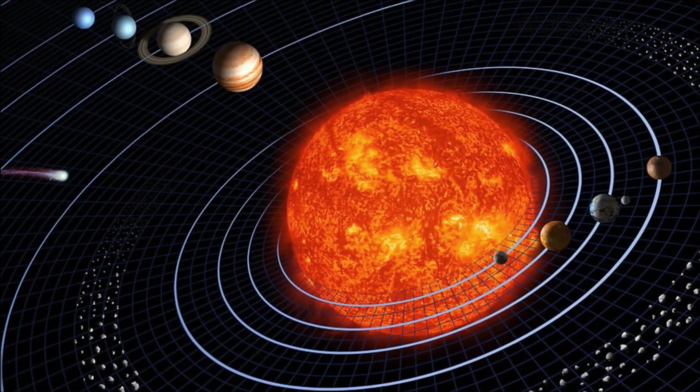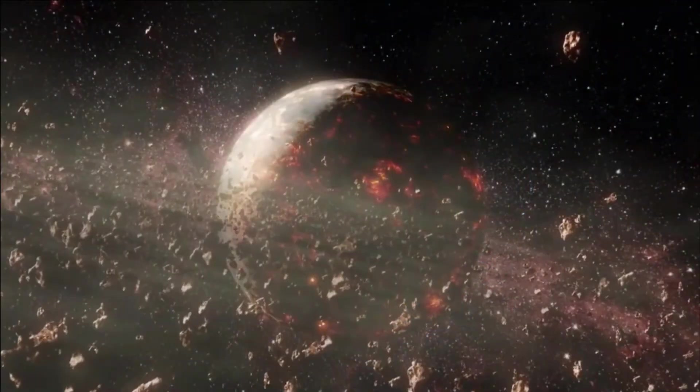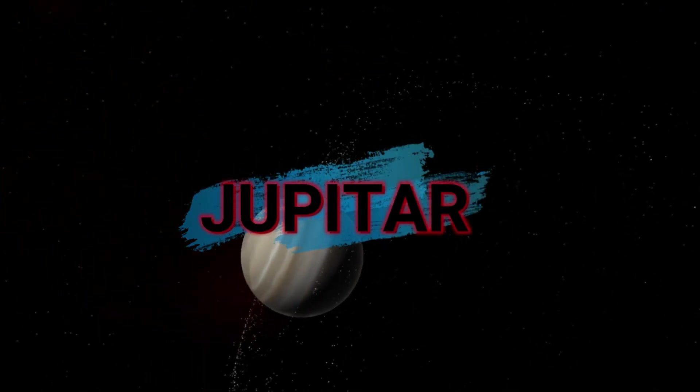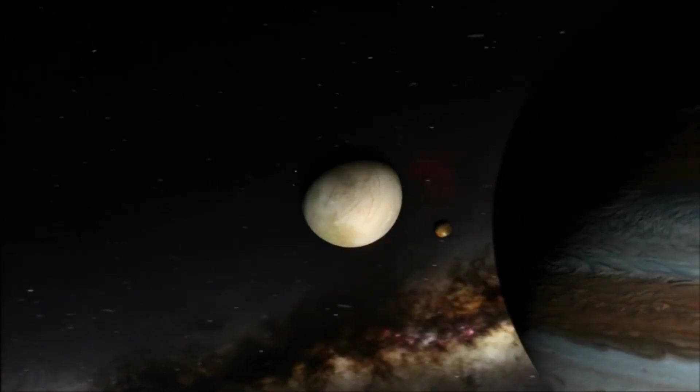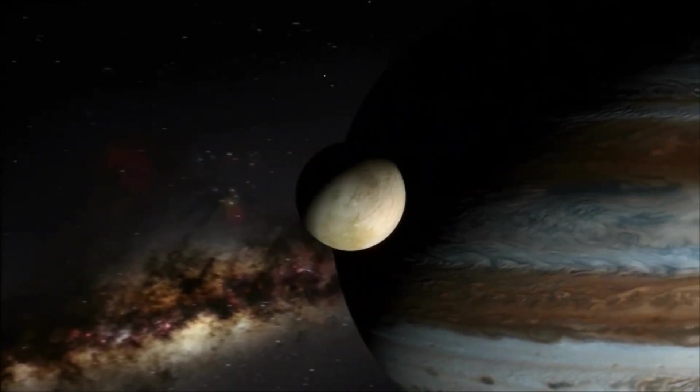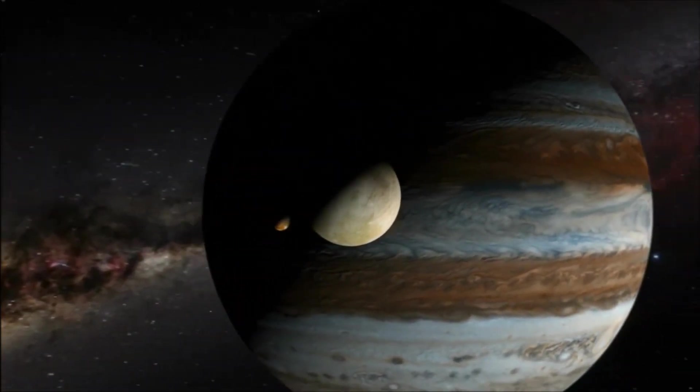One of the horrible planets that make up the list is WASP-76b or Hot Jupiter, as called by scientists. This exoplanet completes its one orbit in two days around its star, which means it is really close to its parent star.